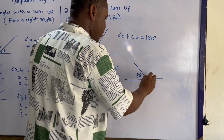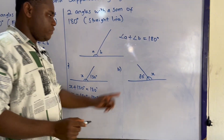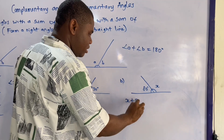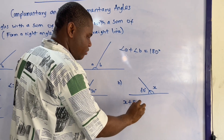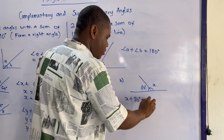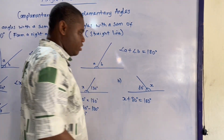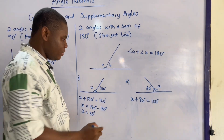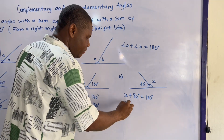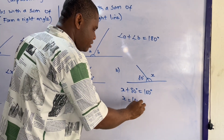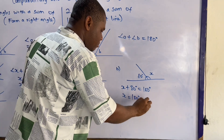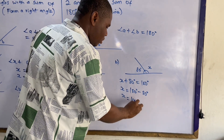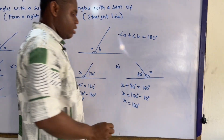For our final example, we have 80 degrees and this is x. To find x, x plus 80 degrees equals 180 degrees, so x equals 180 minus 80, which gives us x equals 100 degrees.